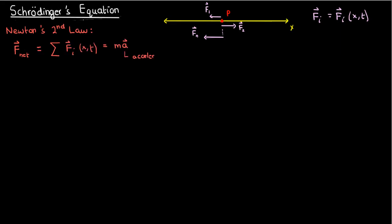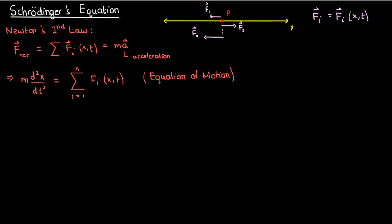The acceleration a can also be written as the second time derivative of position, so we end up with a governing equation: m times d²x/dt² equals the sum from i equals 1 to n of f_i of x comma t. This is what we would call the equation of motion.